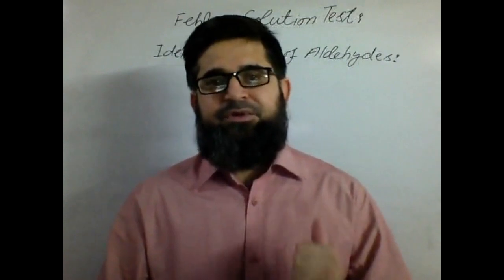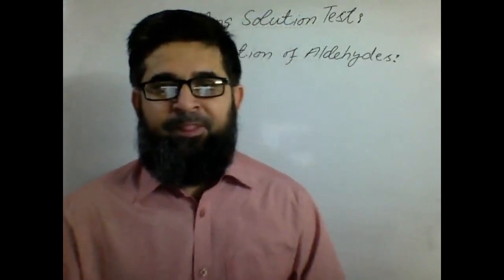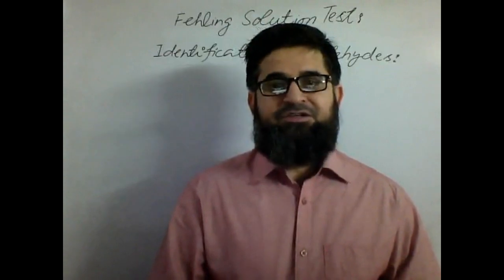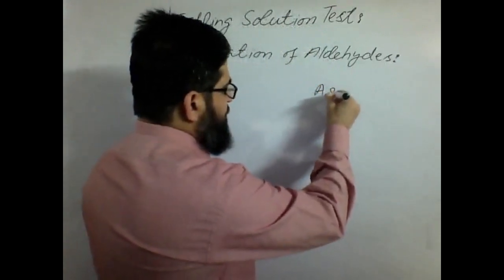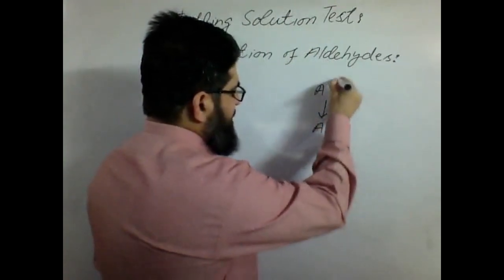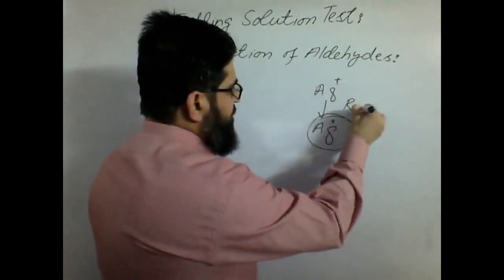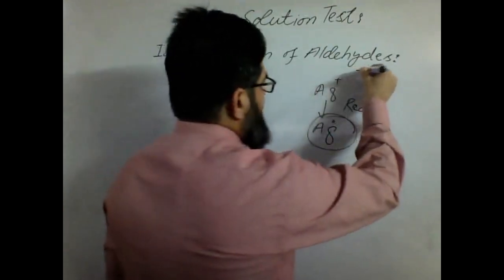In my last talk to you, I explained the chemistry of Tollens test. That test helps you to identify the presence of aldehydes as unknown compounds. During that confirmatory test, we discussed that the Tollens reagent, which is an ammoniated silver nitrate solution, undergoes a reduction where Ag+ becomes Ag0 — in Tollens test.